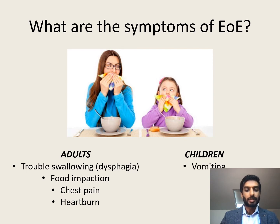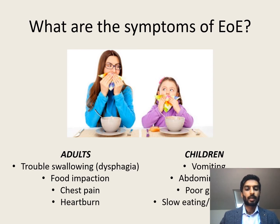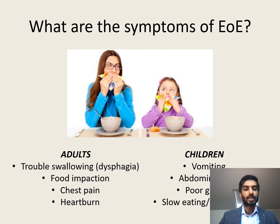In children, however, the symptoms can be much more varied and a little harder to predict. Things can include vomiting, abdominal pain; the child may not be growing well and may be labeled as a slow or fussy eater. In adolescents, symptoms may present from both of these types.